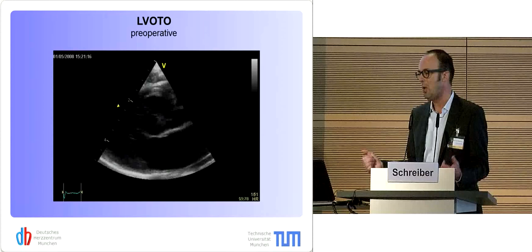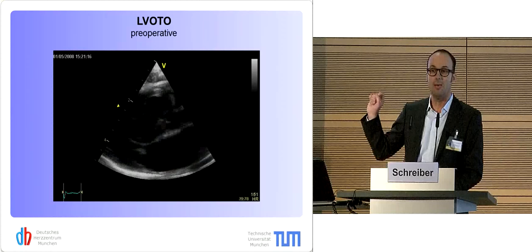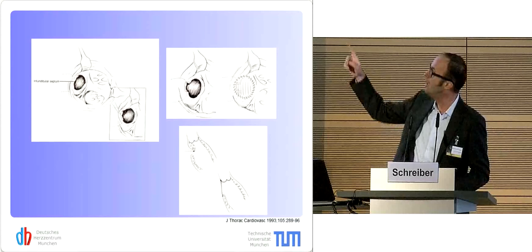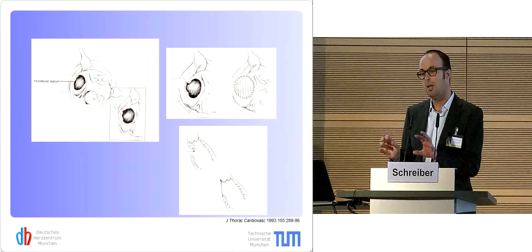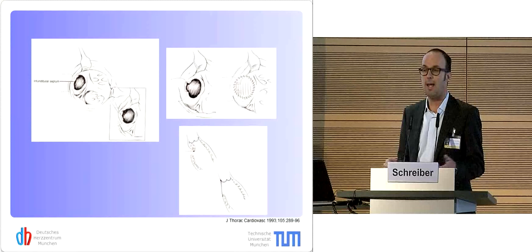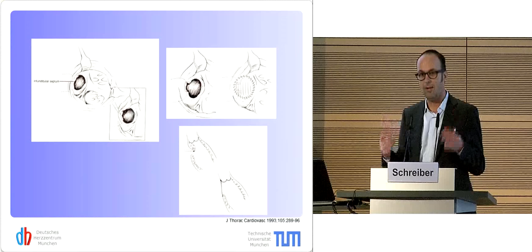Outflow tract obstruction — and we had a lecture about this yesterday — is not that difficult to tackle, as long as the aortic valve annulus is big enough. As a surgeon, you can cut away that muscle shelf or incise it, enlarge and patch the VSD, or use other techniques to at least temporarily relieve a narrow-looking LVOT, with the hope that the aortic valve — which is often bicuspid — will grow.